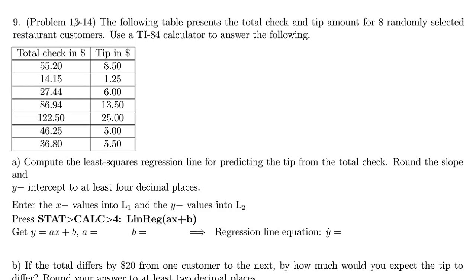In problem number 9, which is like 13 and 14 on the exam review, we've got a table that presents the total check and then the tip amount for eight randomly selected restaurant customers. We're going to use the TI-84 calculator to answer the following questions.